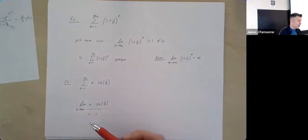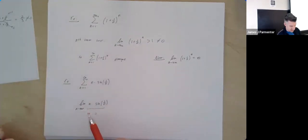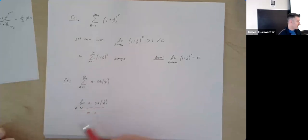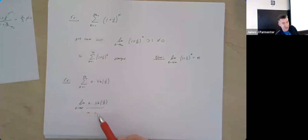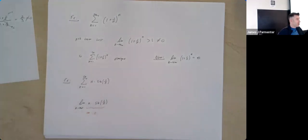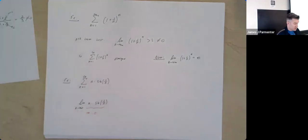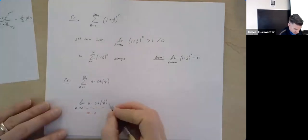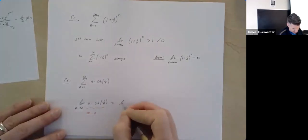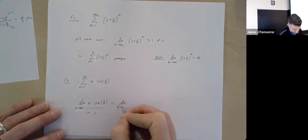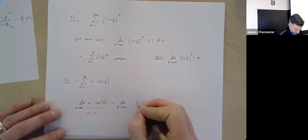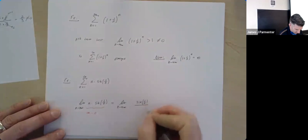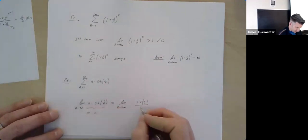It's hard to know whether the product gets really large, really small, or lands somewhere in between. We can rewrite it: the limit as N goes to infinity of sin(1/N) over (1/N), i.e., dividing by the reciprocal of N. Now we have a 0/0 form, and we can apply L'Hôpital's rule or recognize the standard limit.